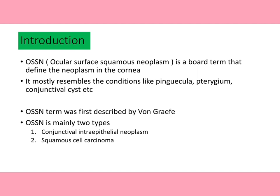Squamous cell carcinoma, or SCC, is the advanced stage of OSSN disease. It is seen that the African population is more affected by OSSN, as they are more sun-exposed and the incidence of HIV in that population is higher compared to other continents.